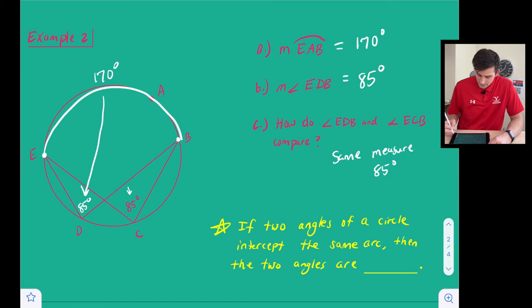So that brings us to this sentence here in yellow at the bottom. It says if two angles of a circle intercept the same arc then the two angles are congruent. Okay so let's look at what that says there.